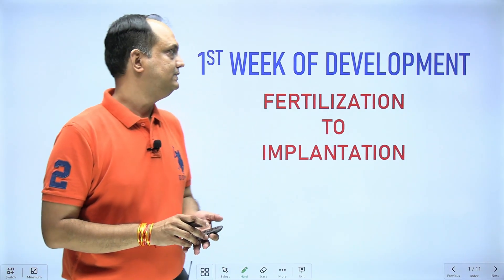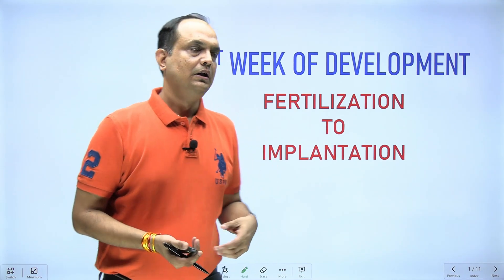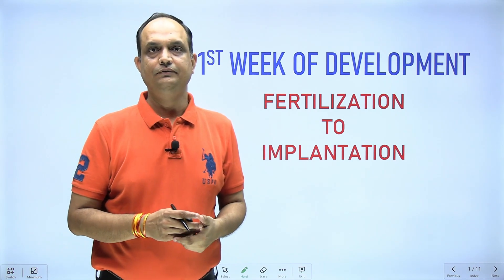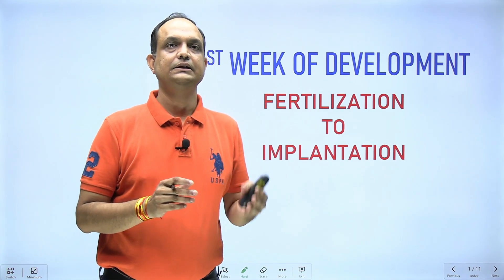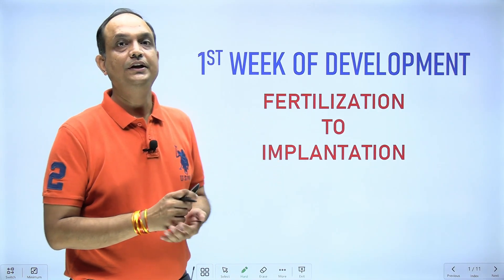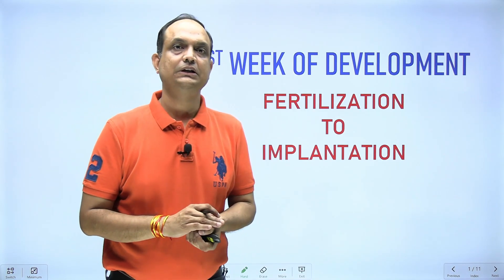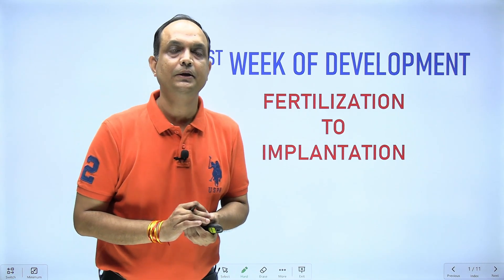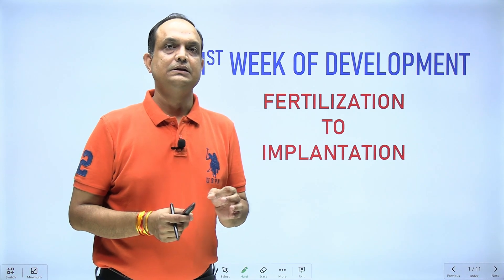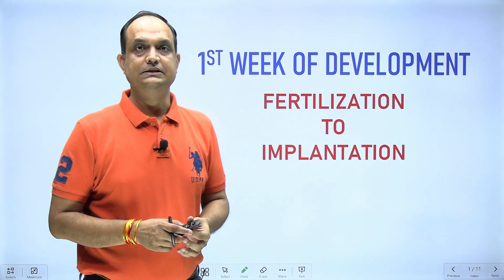Hello students. In today's lecture I will talk about fertilization. Whenever we talk about development in the first week of life, what will happen is that as soon as ejaculation occurs, the sperm is going to meet with the secondary oocyte. The secondary oocyte and sperm meet in the ampullary part of the fallopian tube, and that process is known as fertilization.